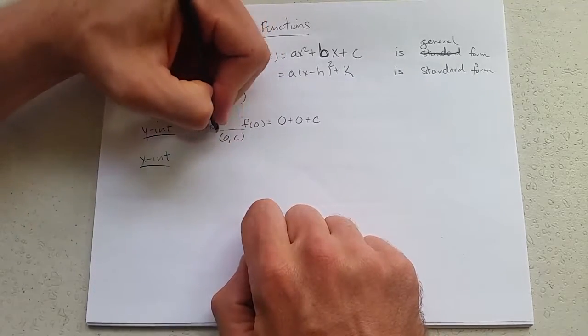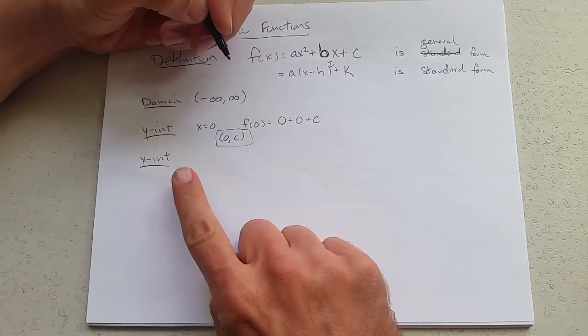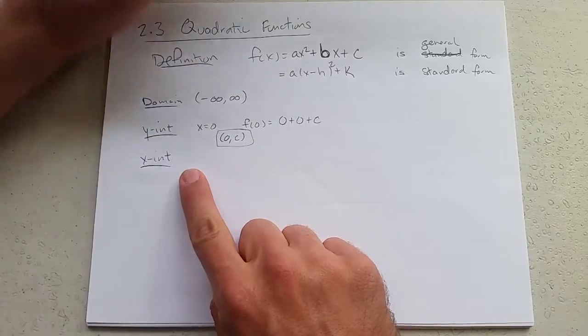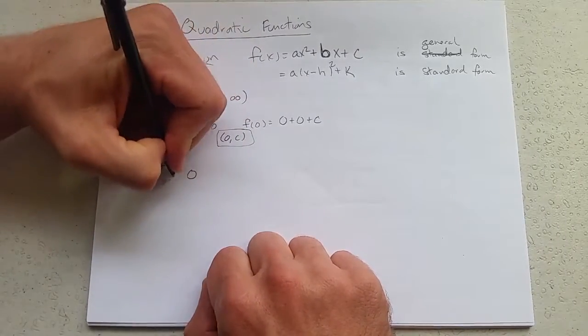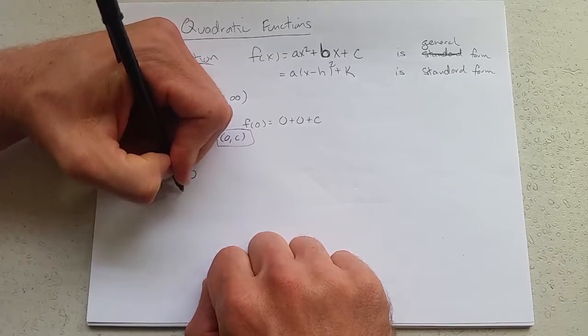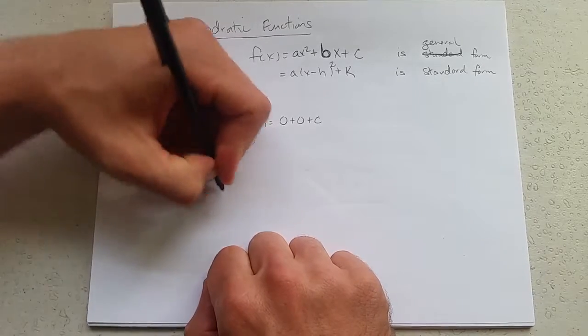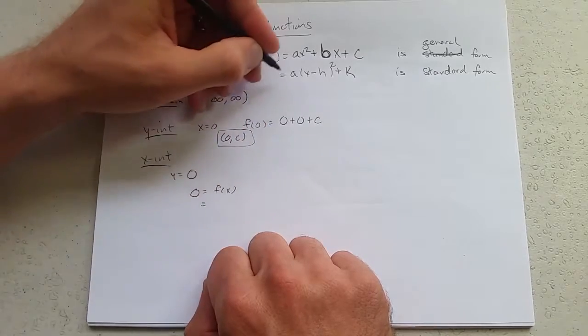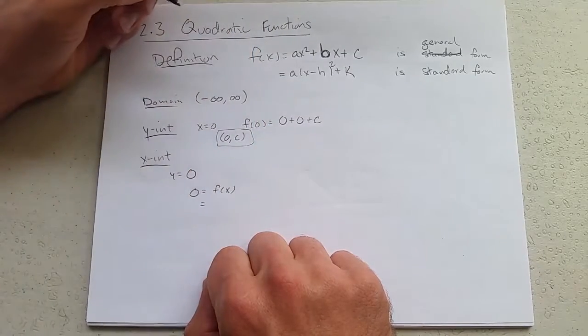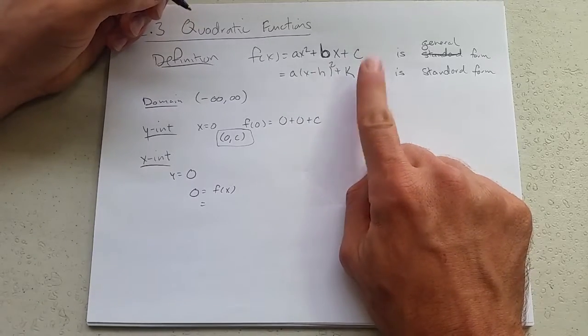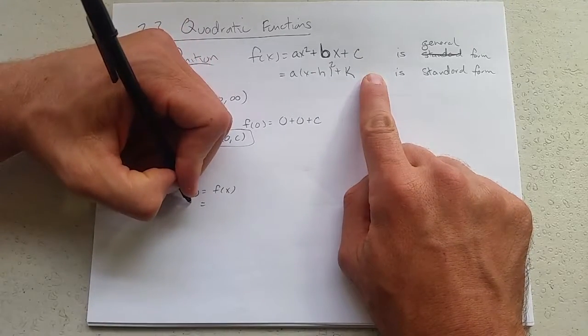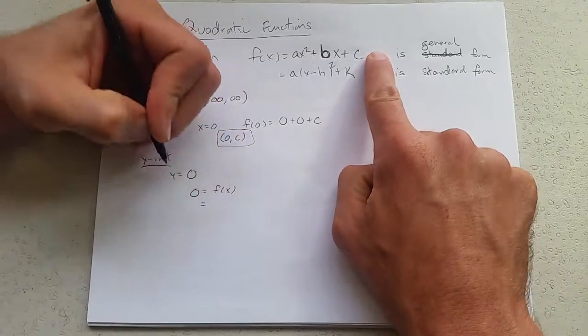X-intercepts, more tricky. We're doing this one last. What do we do for x-intercept? You set y equal to zero. So y is f of x, which is... which was easier to do? I think it'll be easier to solve. Well, we'll go with general form here.